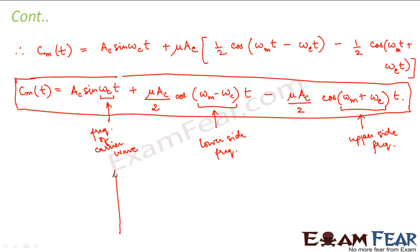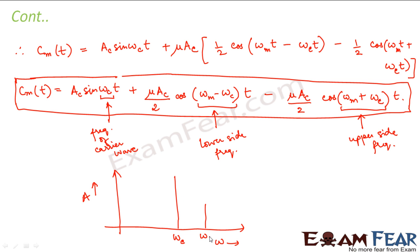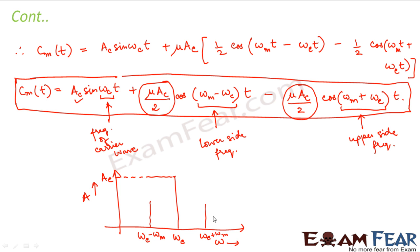If we plot amplitude versus angular frequency, we see the carrier wave at frequency omega-c with amplitude AC. There are also waves at frequency omega-c plus omega-m and omega-c minus omega-m. The carrier wave has amplitude AC, while the other two waves each have amplitude mu AC by 2. So these two sideband waves will have the same amplitude, equal to mu AC by 2.